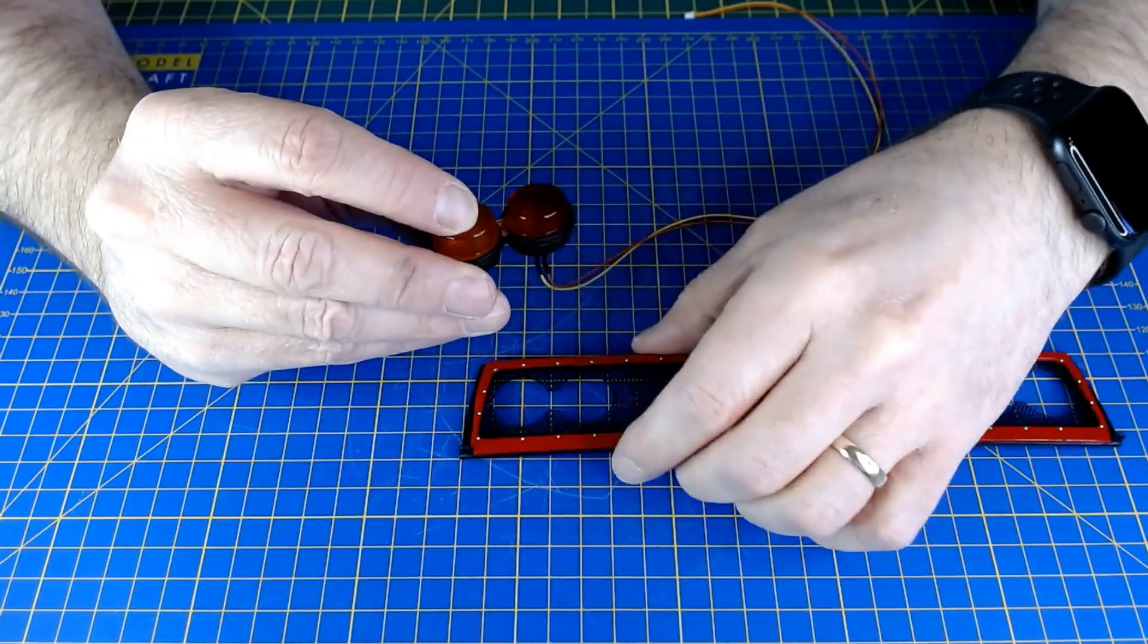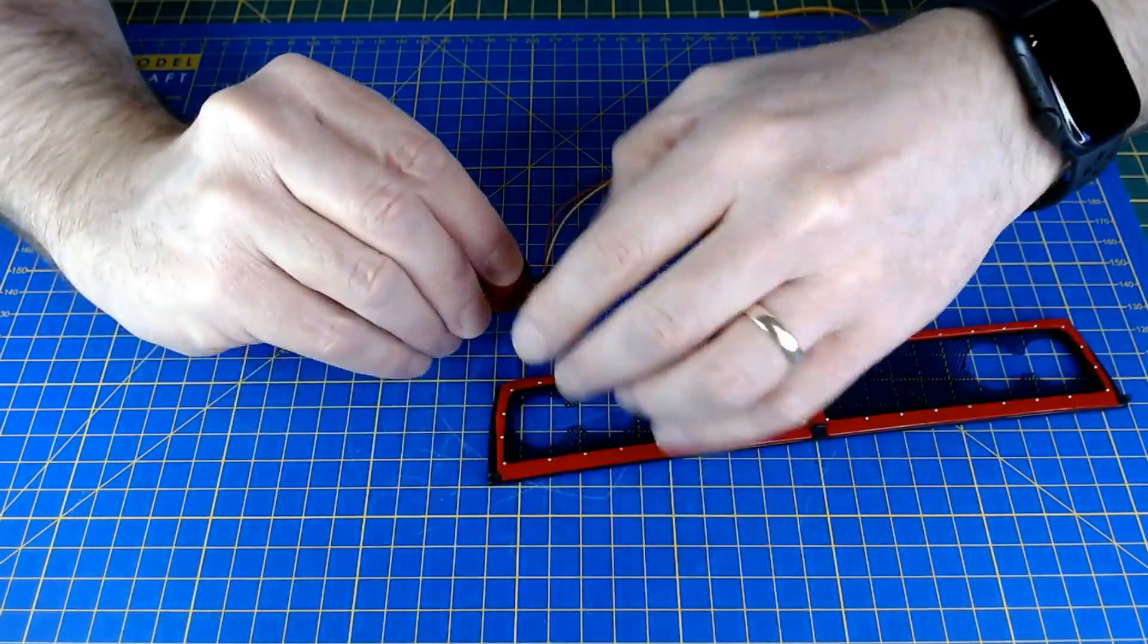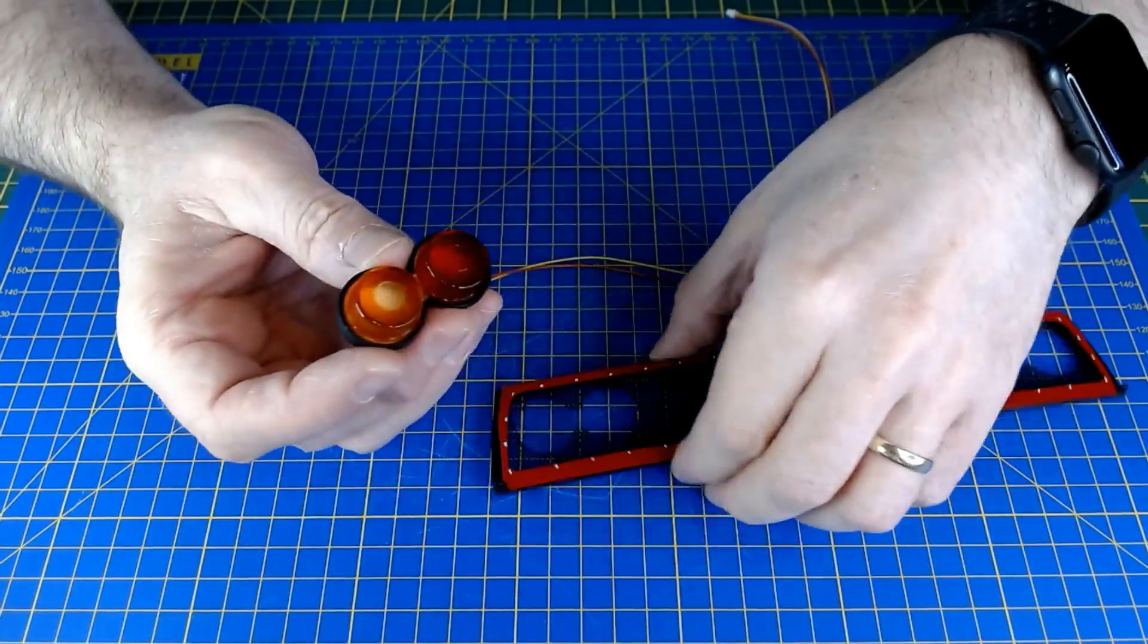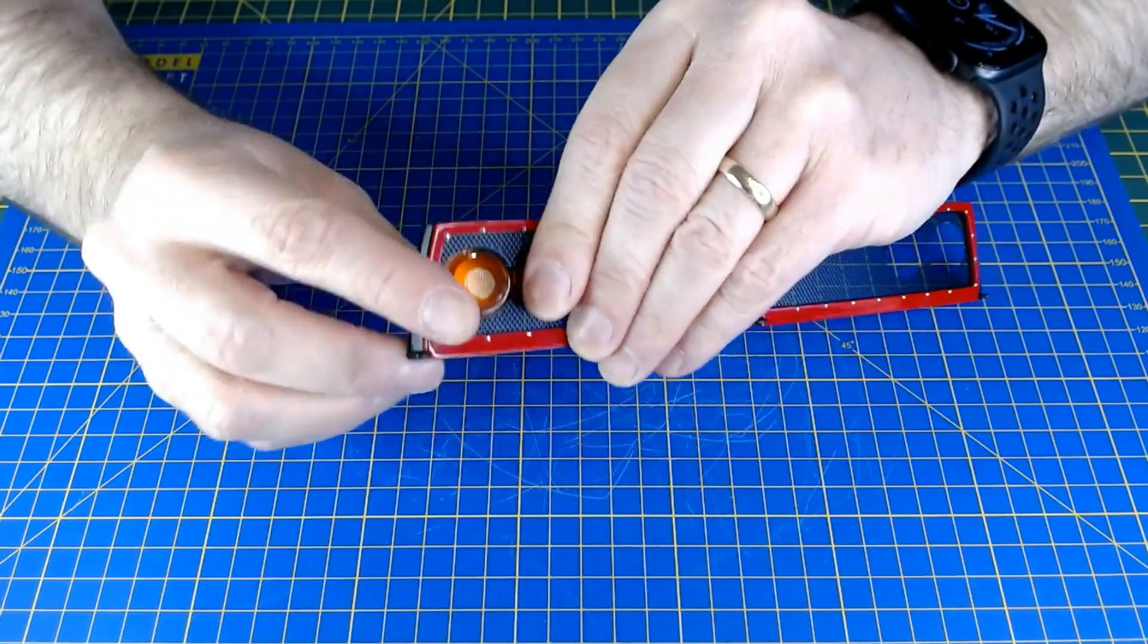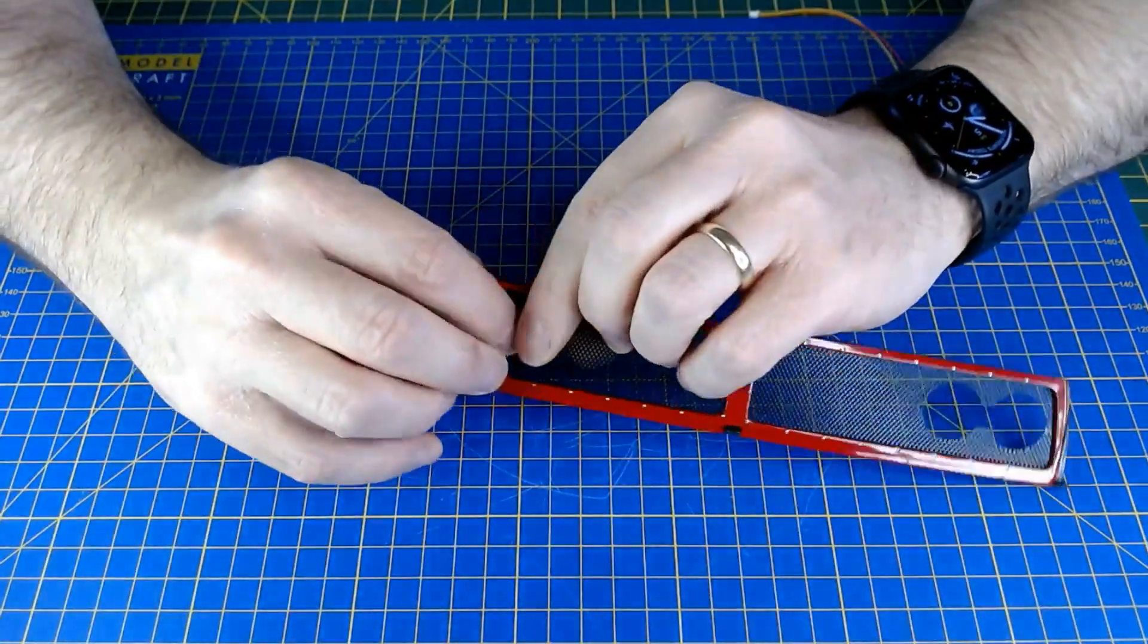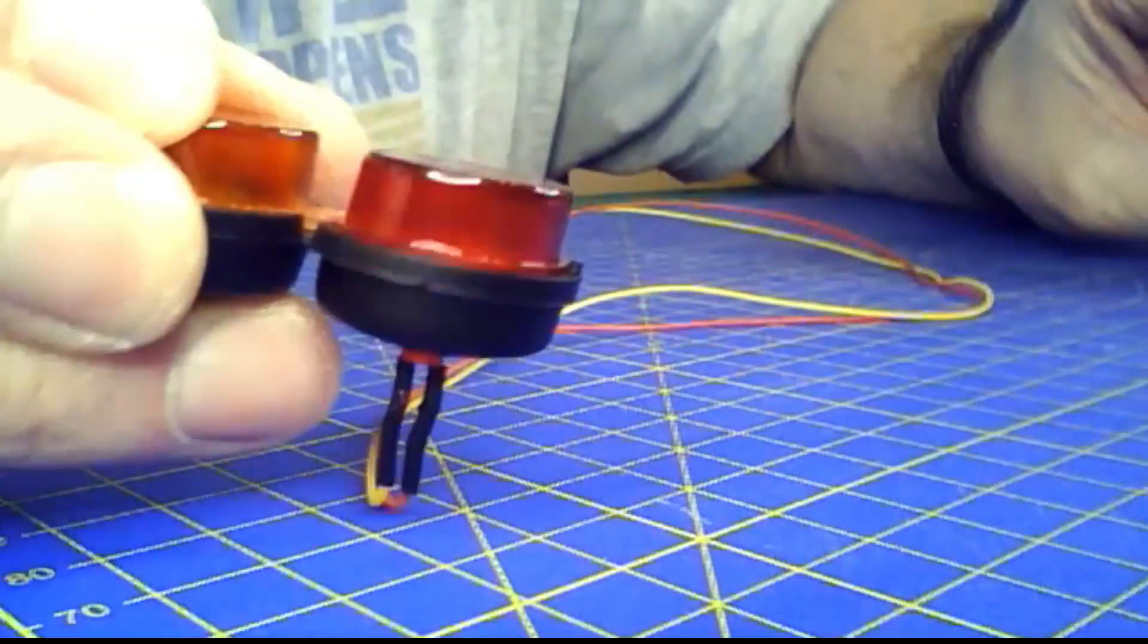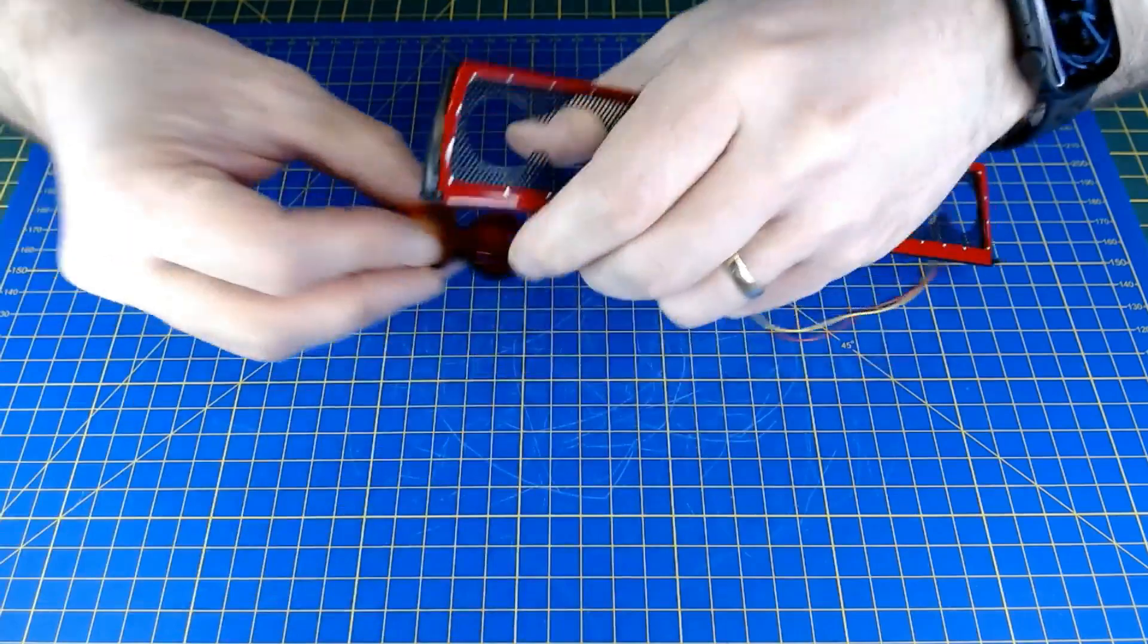Not too sure if there's a keyway or anything that tells you. I don't think there is. You just follow the pictures. There are little pins though, and there's obviously little holes there, so you have to kind of match those up.